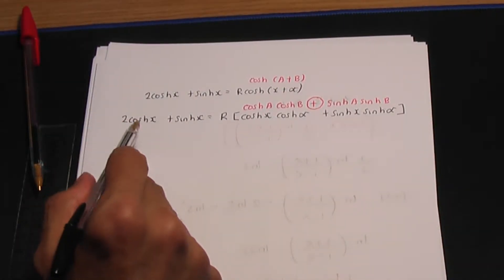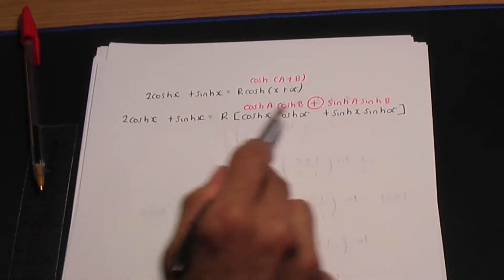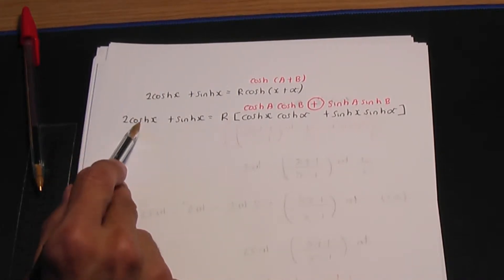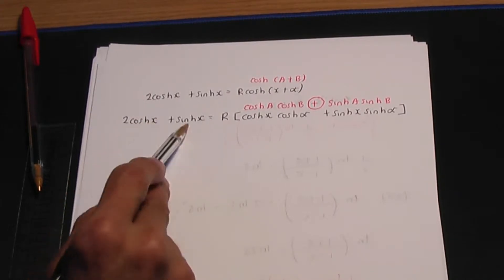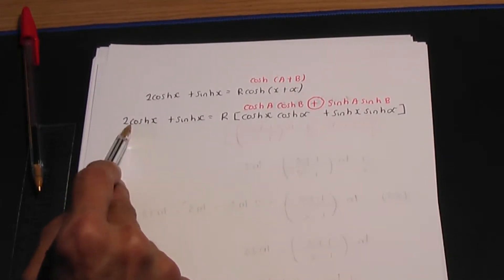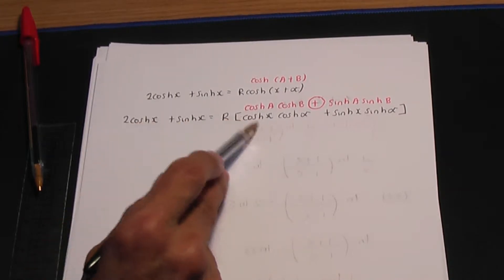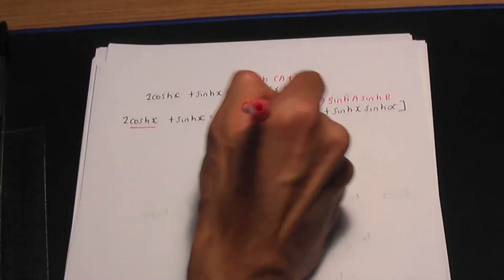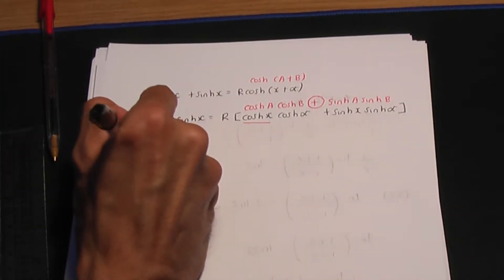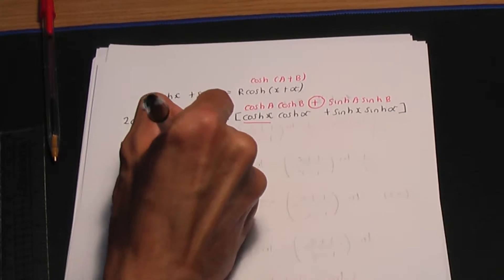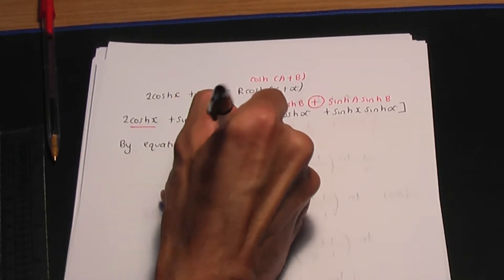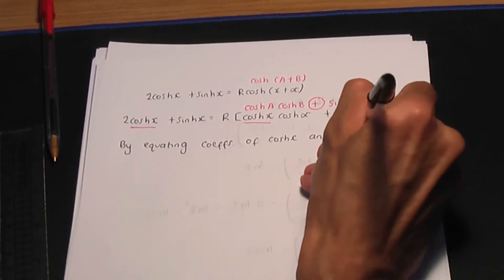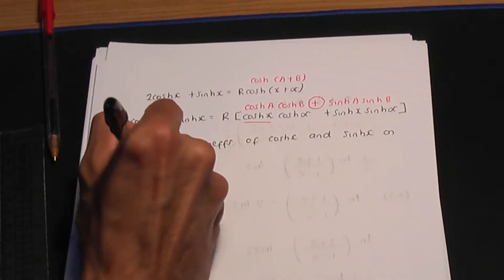In the next step, equate the coefficients of cosh and then sinh on both sides. Do the calculation in the order of cosh then sinh — whichever term appears first, compare those coefficients first. So by equating coefficients of hyperbolic cos and then hyperbolic sin on both sides...